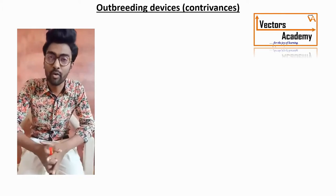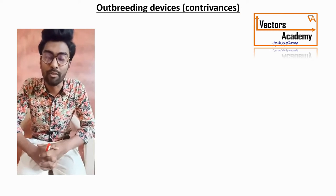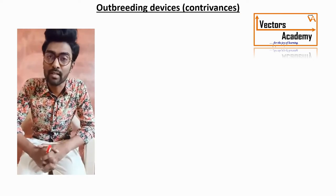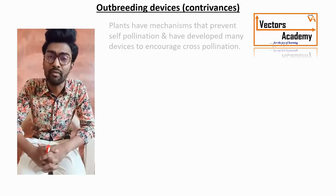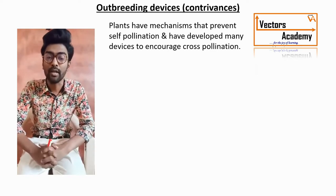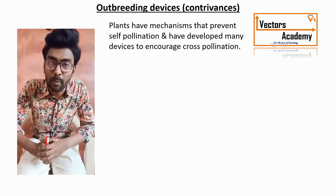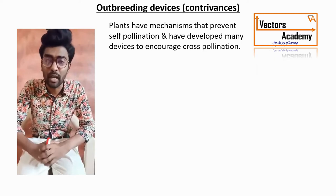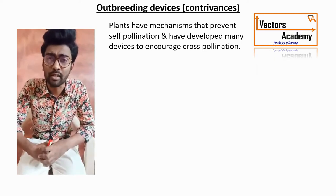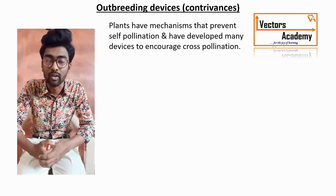Good afternoon students. Today we are going to start with the next topic called outbreeding devices or contradevices for pollination. There are certain plants which have developed certain mechanisms in order to prevent self-pollination. To favor cross-pollination and to increase the genetic variability in plants, there are certain sexual strategies which have been developed, generally called as outbreeding devices.